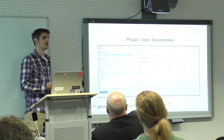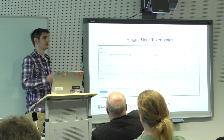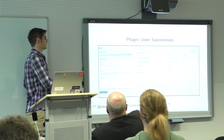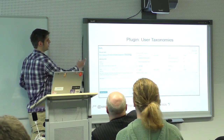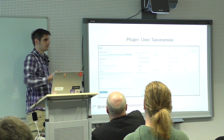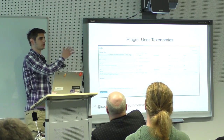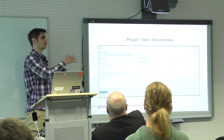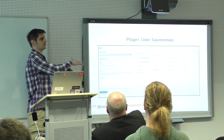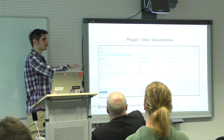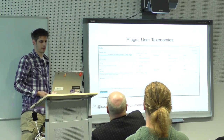Each user taxonomy is added to the users menu. In your WordPress backend, you have the users menu with all users, your profile, add new, and so on — and then you have department, skill, or similar entries where you can manage the taxonomies directly there.